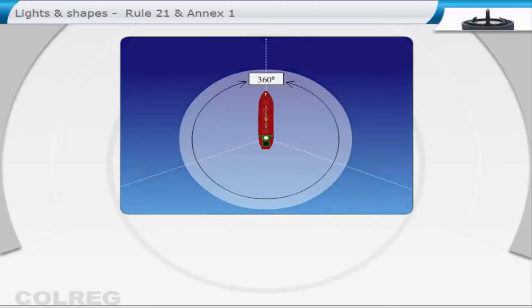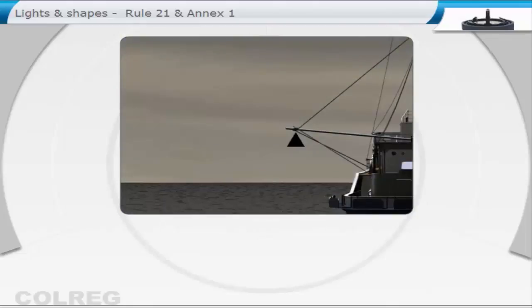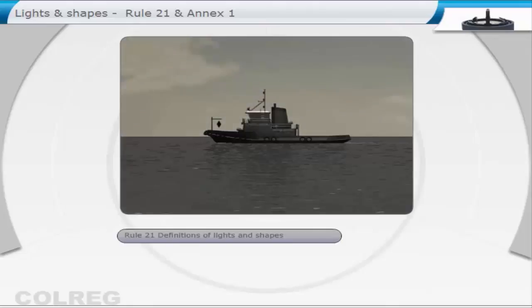Shapes. The shapes defined in these rules consist of a ball, a cone, a cylinder or a diamond, and all are black, and are normally shown where they can best be seen, unless stated otherwise.